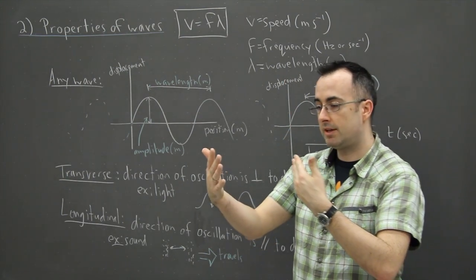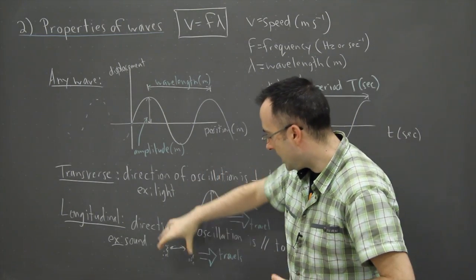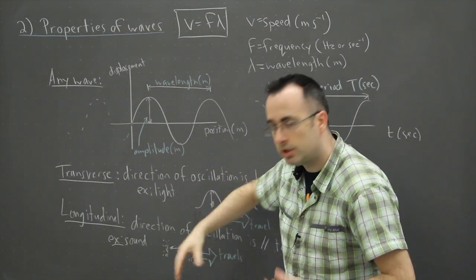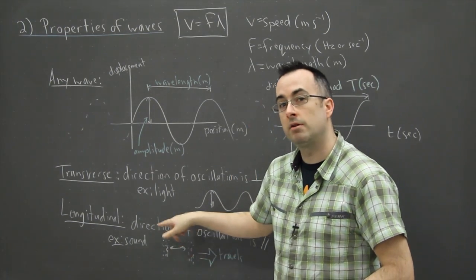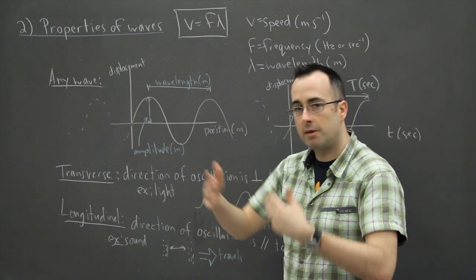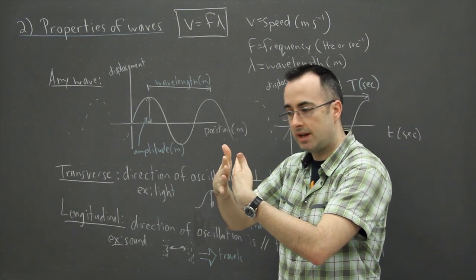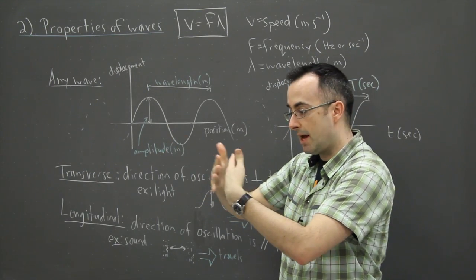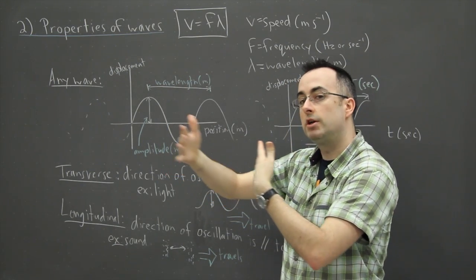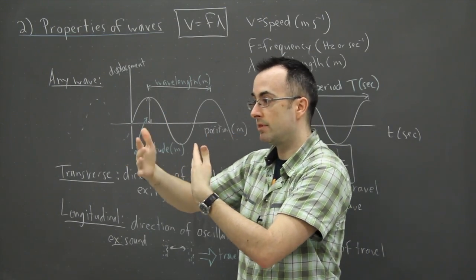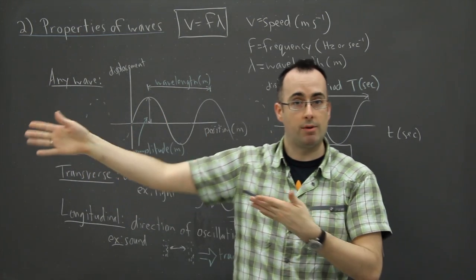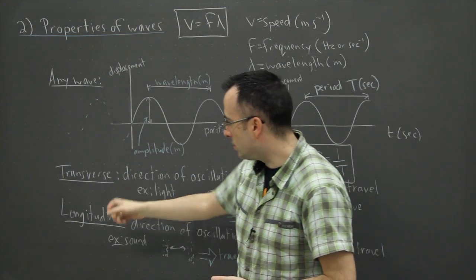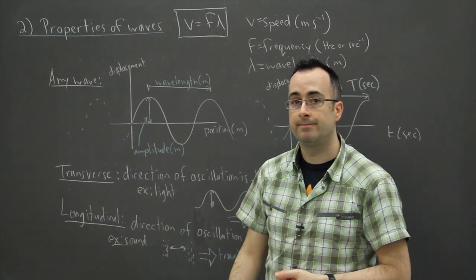That's an example of a longitudinal wave. Sound, for example, which is what I'm doing right now as I speak—I'm creating these areas where there's compression of molecules and also areas where there's not so much, called a rarefaction. I've got places where there's more molecules together and then less molecules. As I'm speaking, I'm causing them to vibrate back and forth, and that travels in that same direction or at least parallel.